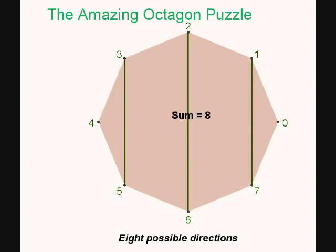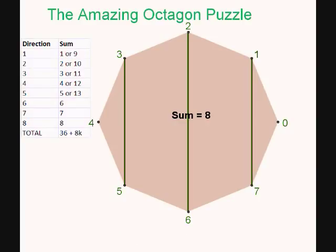Now, we have 8 different directions, and we need 8 segments. So, if no two segments are parallel, that means that we are going to have one segment from each direction. We're going to pick one number from each row here. And, if we pick one number from each row, it's going to add up to 36 plus a multiple of 8. Because, the numbers from 1 through 8 add up to 36. But, each time we pick one of the higher of the two numbers, we add 8 to the sum.